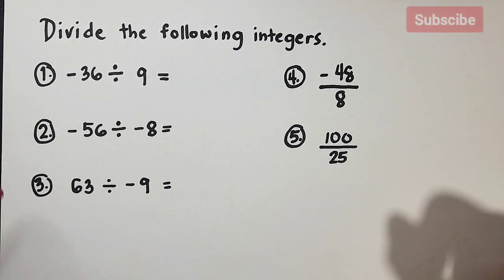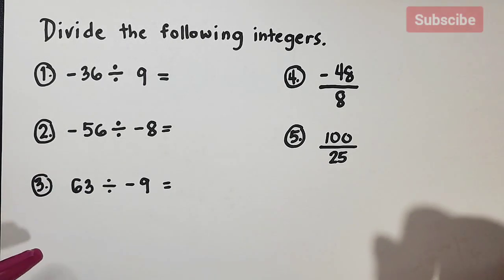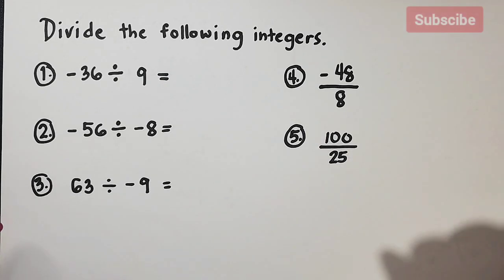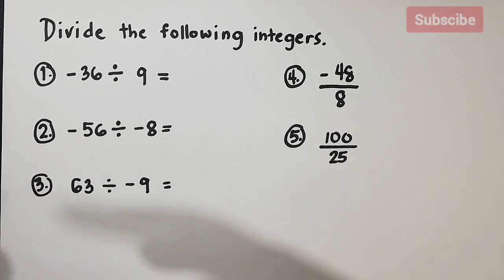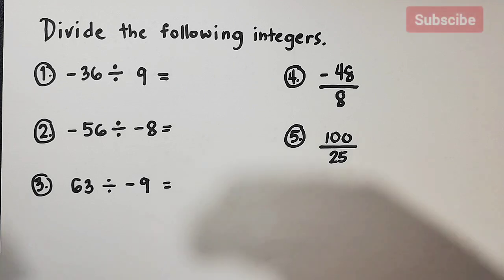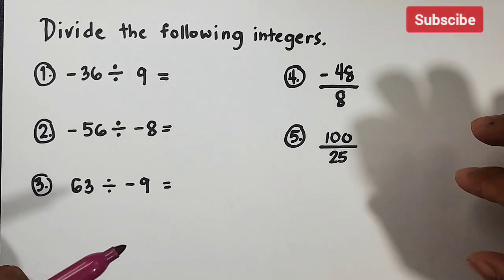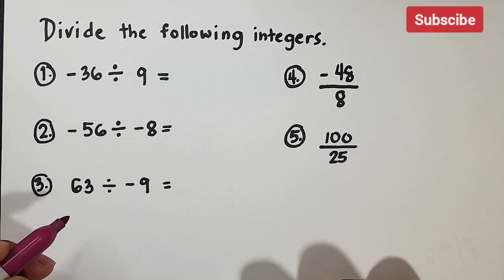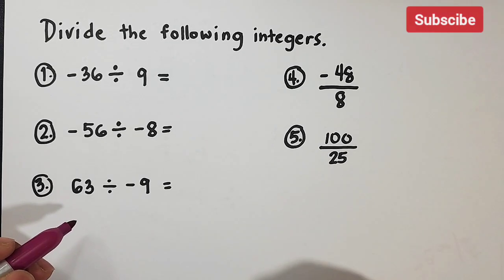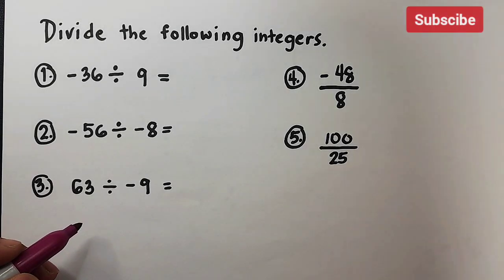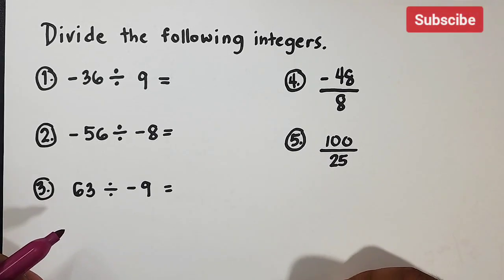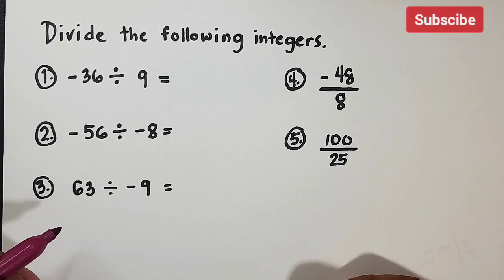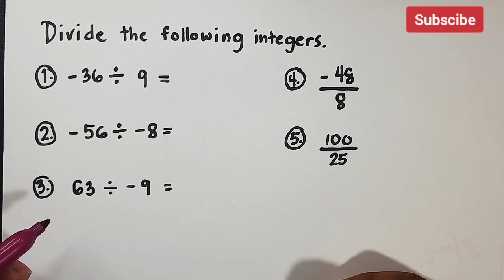What we have here is: divide the following integers. Right now we have five different examples, and these are the possible forms on how to divide integers. Before we start, let's review the rules on how to divide integers. When we are dividing integers, it is the same as multiplying integers.